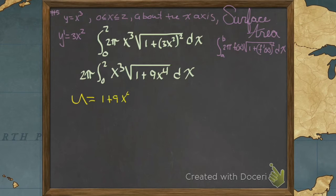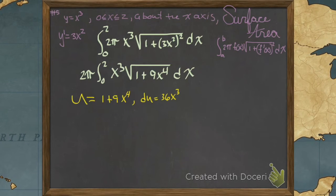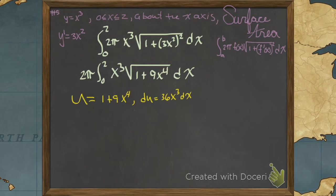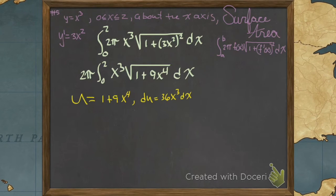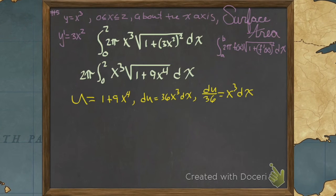Our 3x squared gets us 9x to the fourth, and that's a simple u sub. It's basic. So then that gets us our u and our du. Forgot my dx, there it is. Now let's go ahead and find our pieces. We divide both sides by 36 of our du, and that's that. Now it's just a sub.